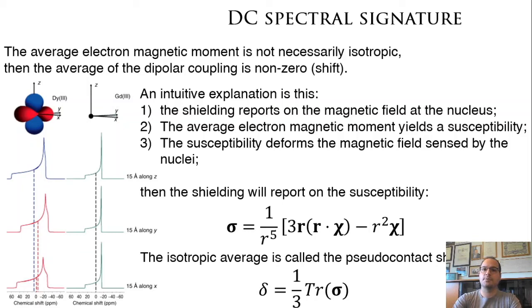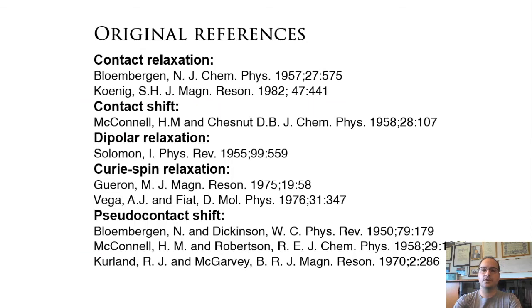Now, these are some references to the original publications. For the contact relaxation, the papers by Bloembergen and by Koenig. For the contact shift, McConnell and Chesnut. The dipolar relaxation, Solomon, Physical Review. Curie spin interaction, Gueron and Vega and Fiat.